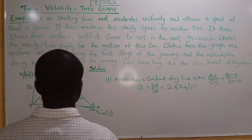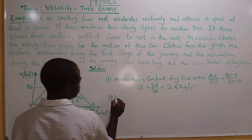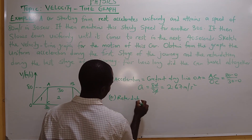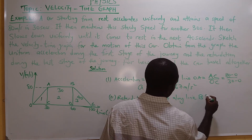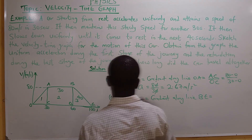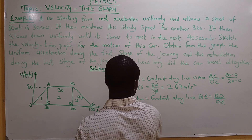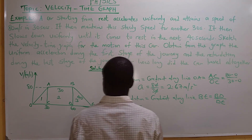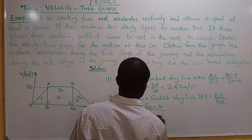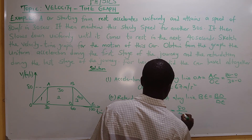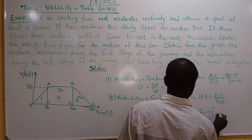The retardation during the last journey is along line DE. Retardation equals change in velocity over time, which is BD over DE: (80 minus 0) divided by (100 minus 60), which is 80 divided by 40, giving 2 meters per second squared. So retardation is 2 meters per second squared.